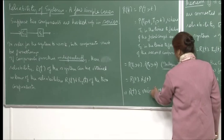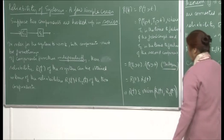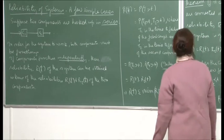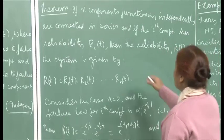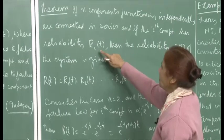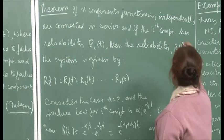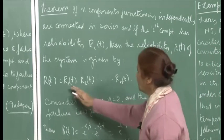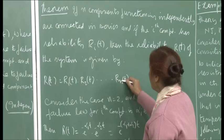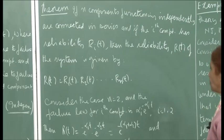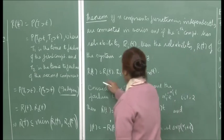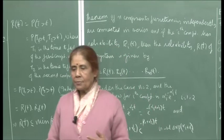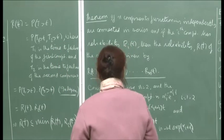This can be generalized: if n components functioning independently are connected in series and the i-th component has reliability ri(t), then the reliability r(t) of the system is given by the product of the individual reliabilities. As you add more components hooked up in series, the lower the reliability, because you require all of them to be functioning for the system to function.